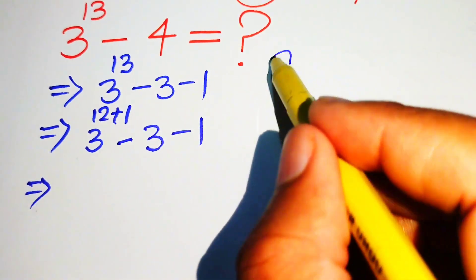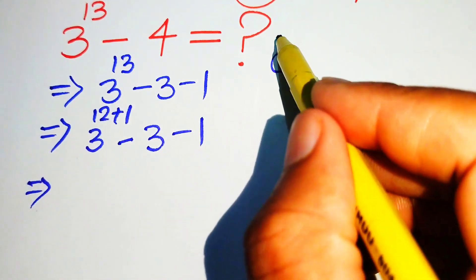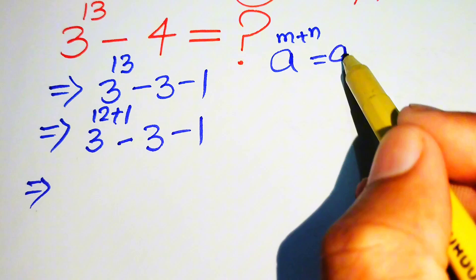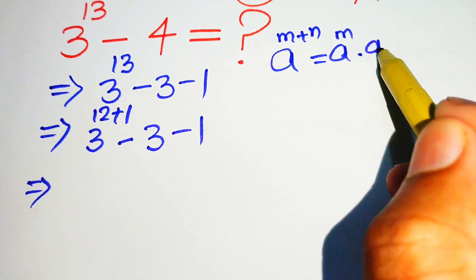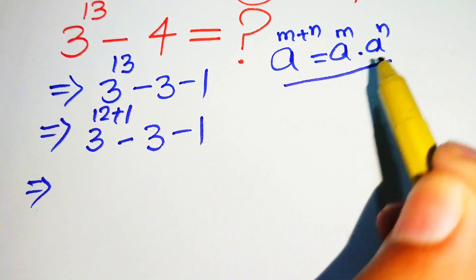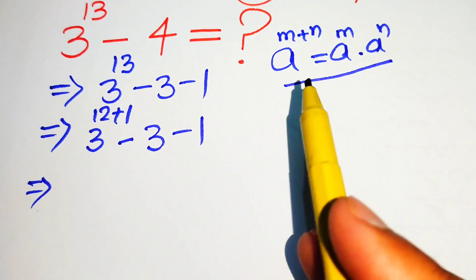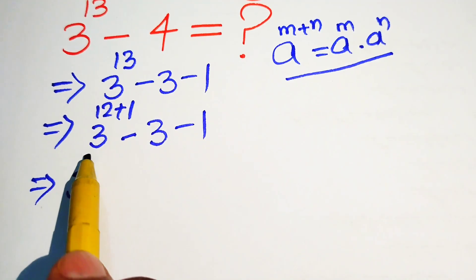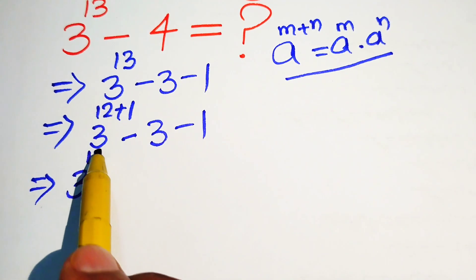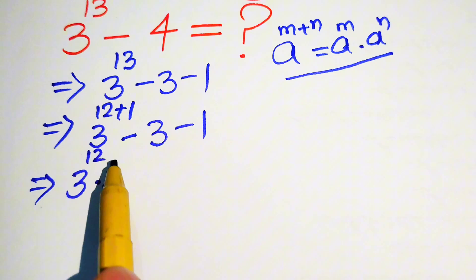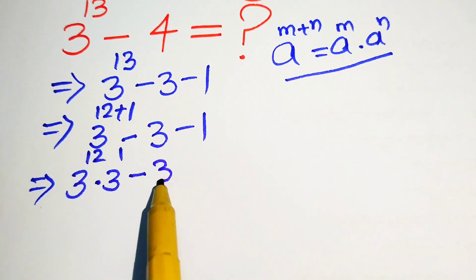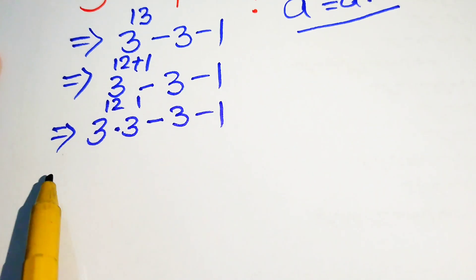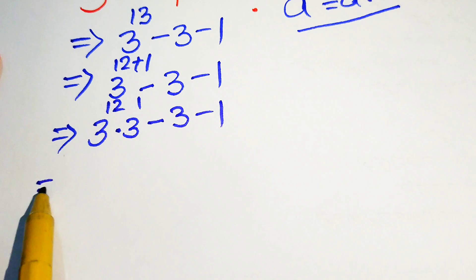In the next step we use the exponential law: a to the power of m plus n equals a to the power of m times a to the power of n. Using this law, we break the expression and write it as 3 to the power of 12 times 3 to the power of 1, minus 3, minus 1.